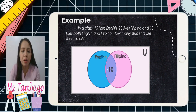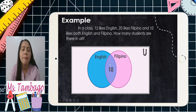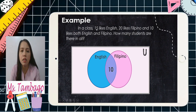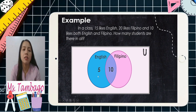Now, how are we going to write those who like English? We have 15 who like English. Since the 10 in the middle part is already inside the circle of English, we're just going to subtract it. So, 15 minus 10 gives us 5 — that 5 is inside the English-only section of the circle.